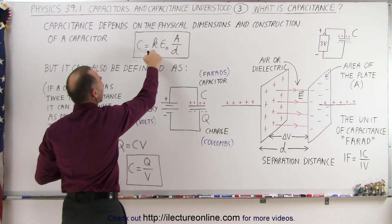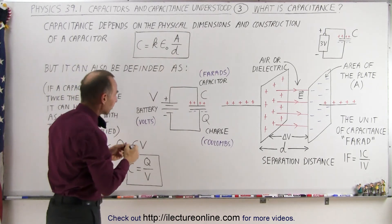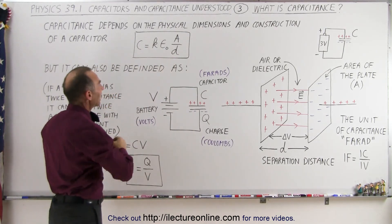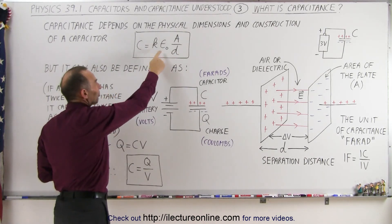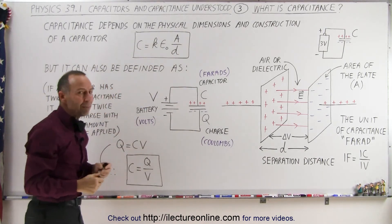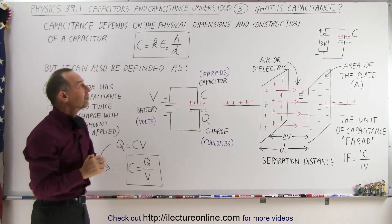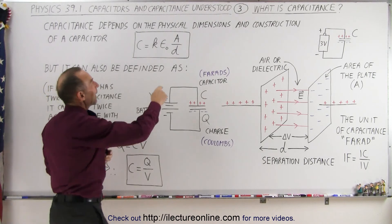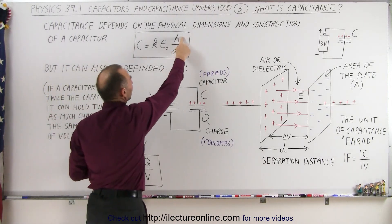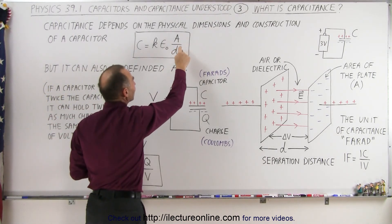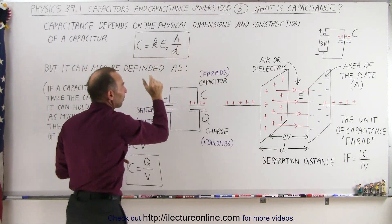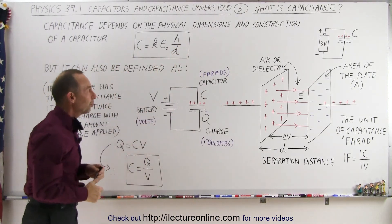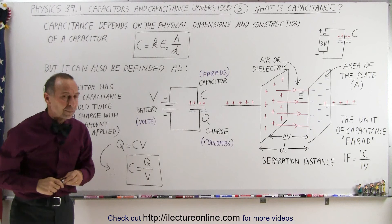Notice that k is the dielectric constant, epsilon sub-naught is the permittivity of free space, a is the area of the plate, and d is the separation distance between the two plates.